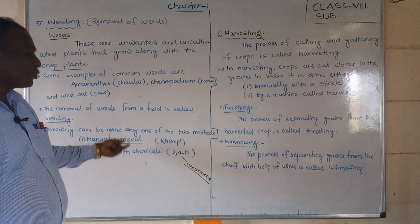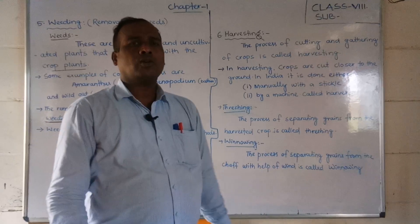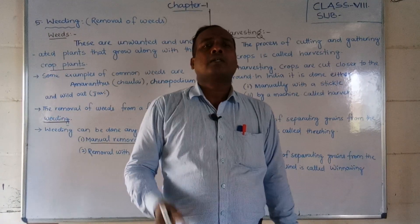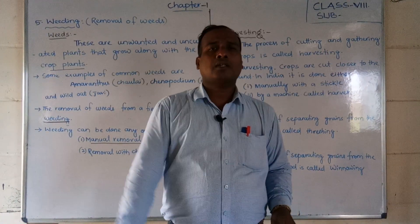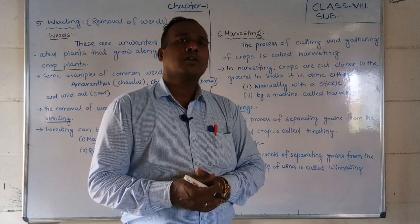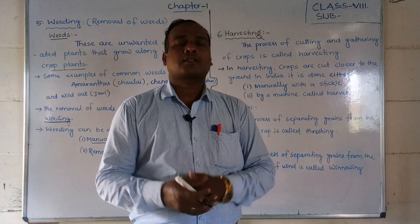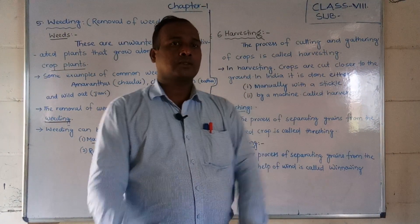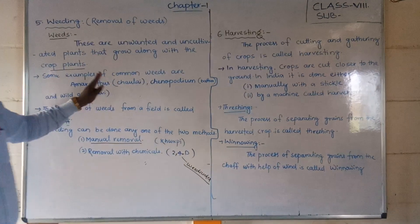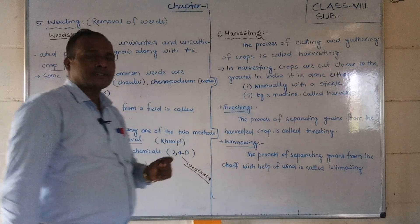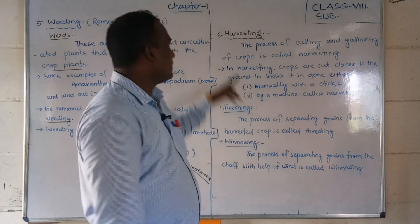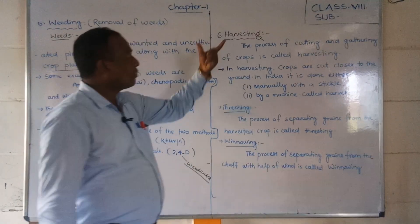So generally there are two methods: manually by hand, and by applying chemicals called weedicides to kill and remove weeds. Weedicides are one of the very important practices in agriculture.